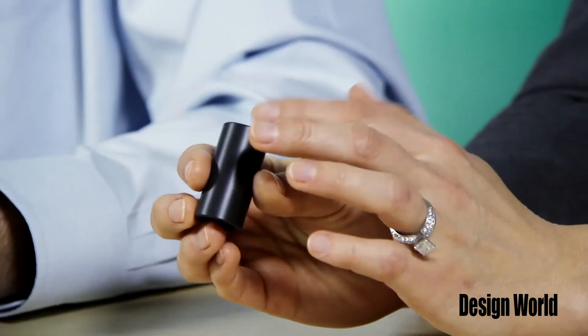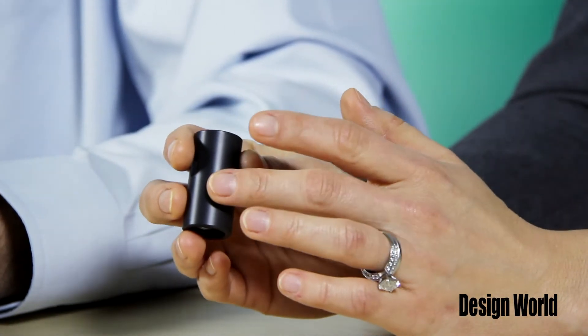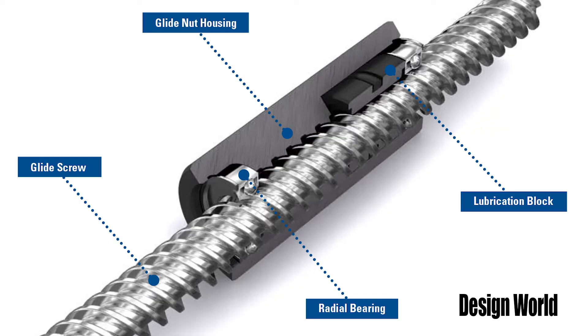So if we take one of these nuts off, we can see some of its internal details. Notice how each end of the nut has a radial bearing to support off-axis loading. And deeper inside here, we can see the surface of a lubrication block as well.